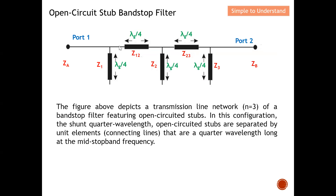This is the proposed open circuit stub band stop filter. At the other end of each stub they are all open circuit, which is why this is called an open circuit stub. This is the connecting line, which connects one open circuit stub to another. The length of the transmission line for both the open circuit stub and the connecting line will all be quarter wavelength.